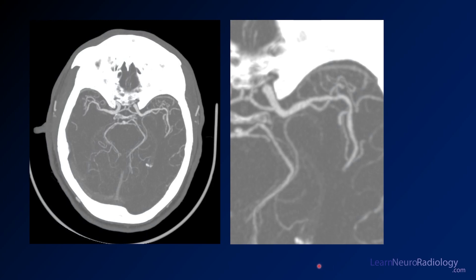Here are some images from a CT angiogram — these are MIPs, meaning slices have been added together to see the maximum intensity. These are really nice for looking at the long axis of vessels and seeing subtle areas of irregularity. On the right MCA, this M1-M2 branch looks pretty irregular. Zooming out on the left side, you see a similar finding — definite irregularity of the left MCA as it branches between M1 and M2.